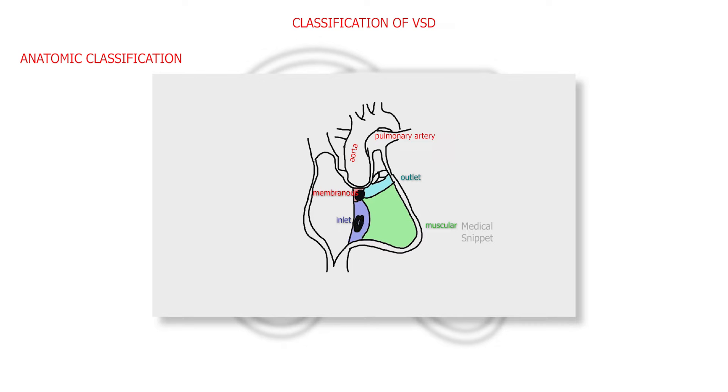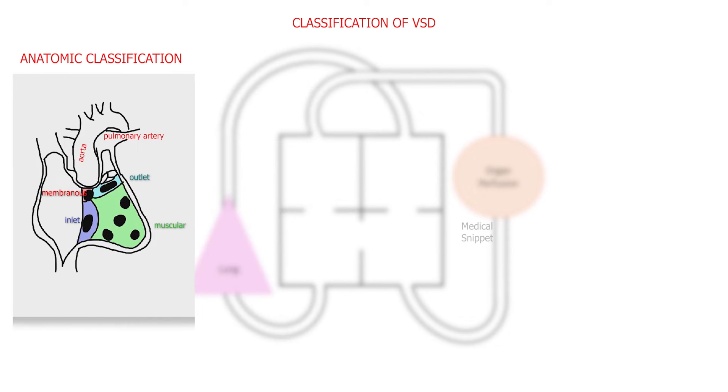Paramembranous VSD, inlet VSD, muscular VSD which can be in the posterior, anterior, midventricular, or the apical part of the muscular septum. And the last is the outlet or doubly committed sub-arterial VSD. The most common type is paramembranous VSD.